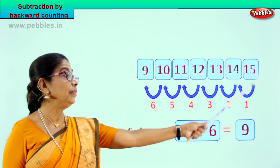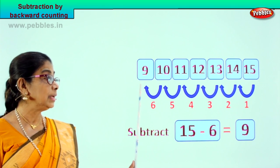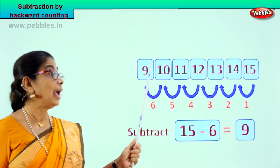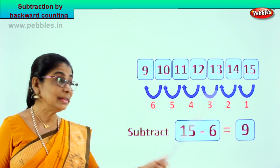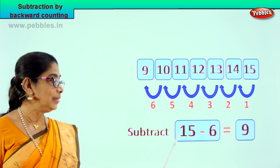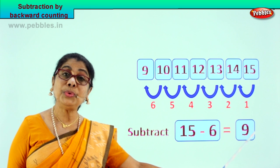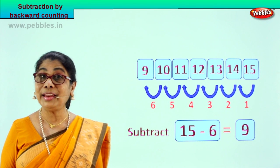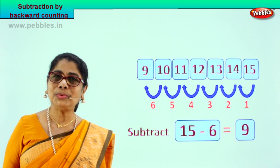From 15 you counted — you jumped 6 steps backward and you came upon the answer 9. 15 minus 6 is equal to 9. Very good. Did you enjoy the backward counting? Good.